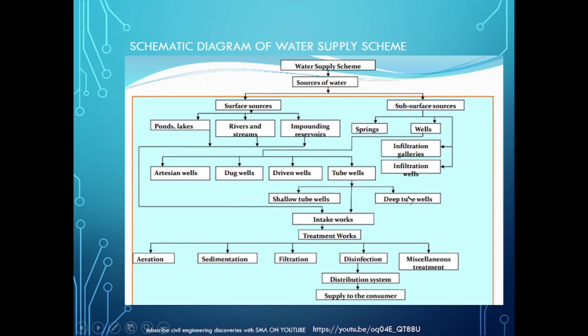After collecting water from surface and subsurface sources, it is forwarded to intake works, then to treatment works where processes like aeration, sedimentation, filtration, and disinfection are carried out. After treatment, the water is supplied through the distribution system to the consumer. This is the complete schematic diagram of the water supply scheme.